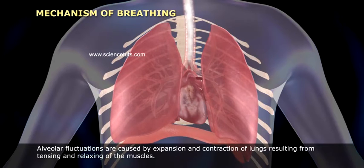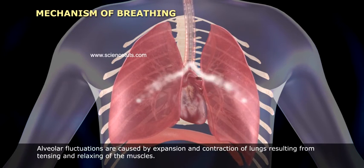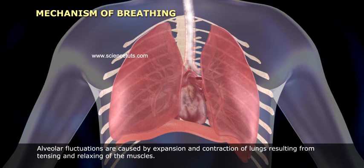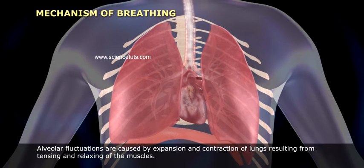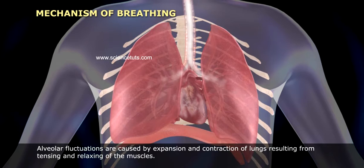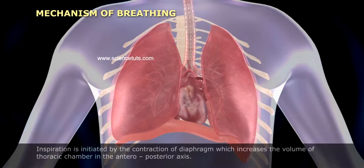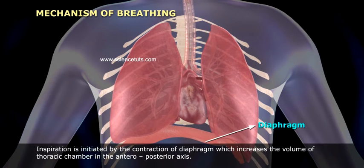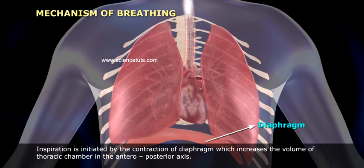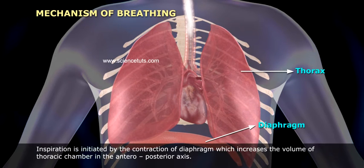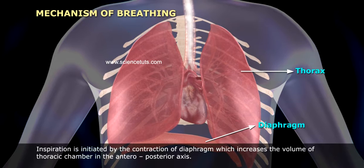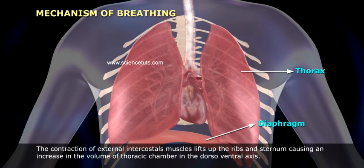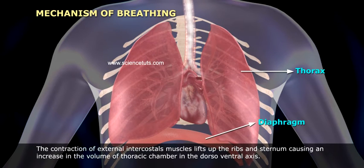Alveolar pressure fluctuations are caused by expansion and contraction of the lungs, resulting from tensing and relaxing of the muscles. Inspiration is initiated by contraction of the diaphragm, which increases the volume of the thoracic chamber in the antero-posterior axis, along with the contraction of the external intercostal muscles.